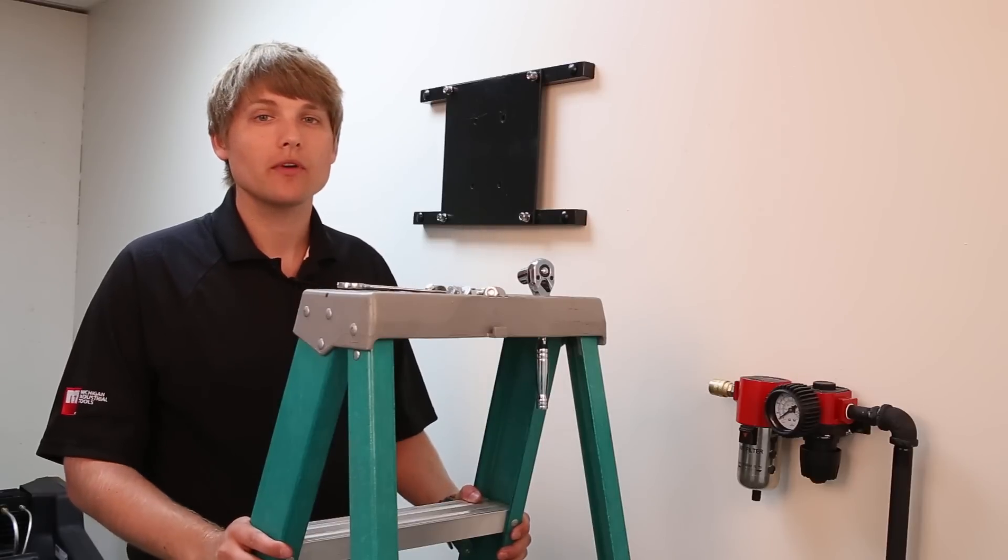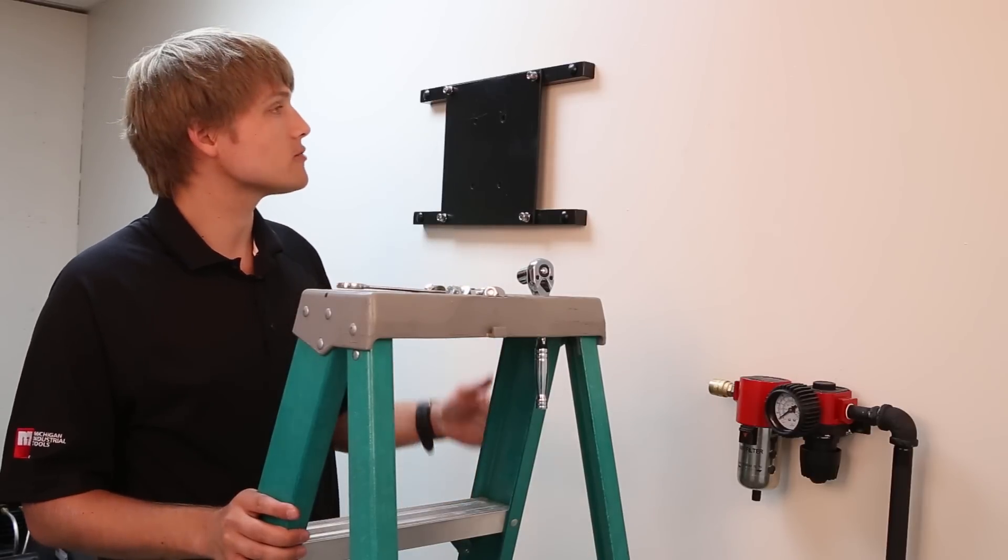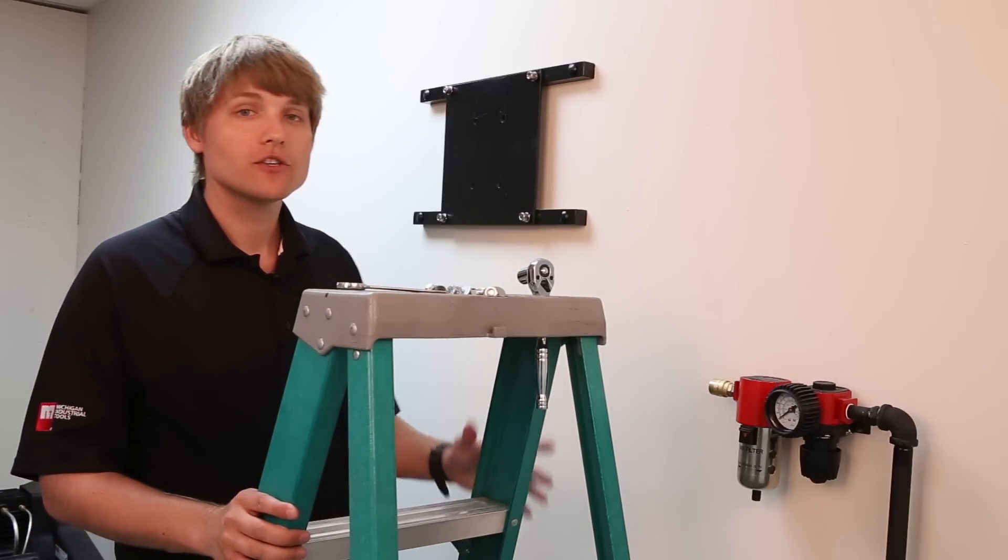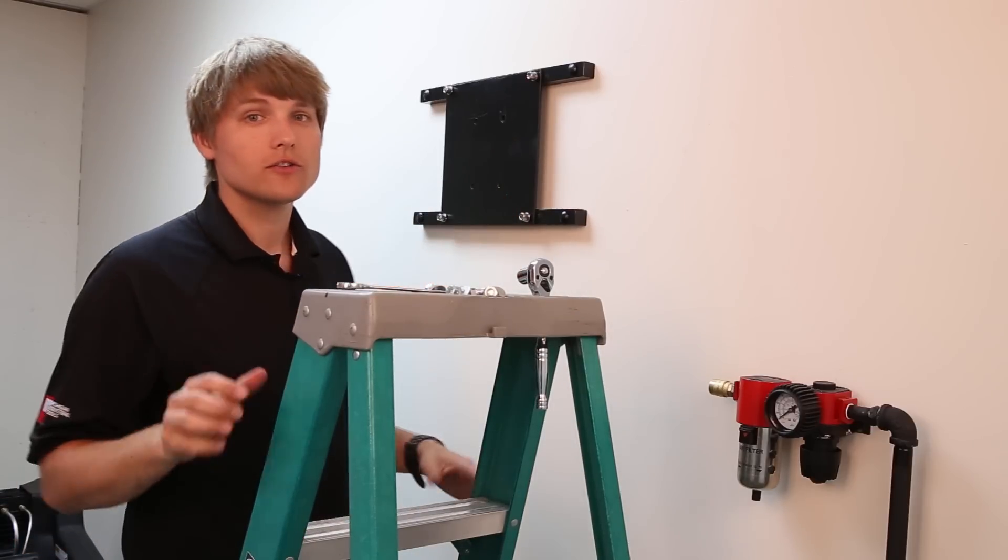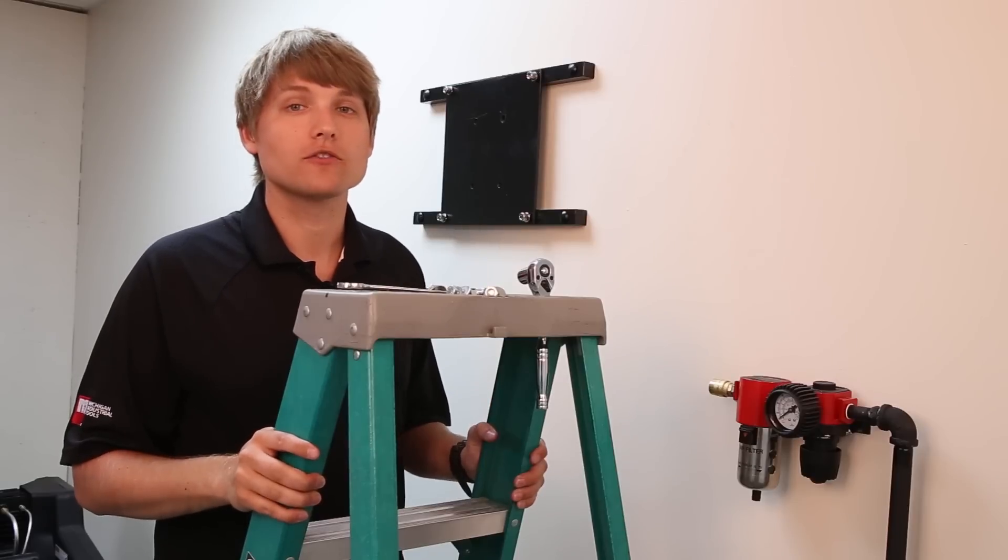For our workshop, we have to install the air hose reel into drywall, so we created this bracket to span two studs so it can support the weight of the air hose reel.